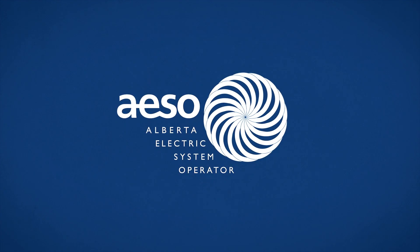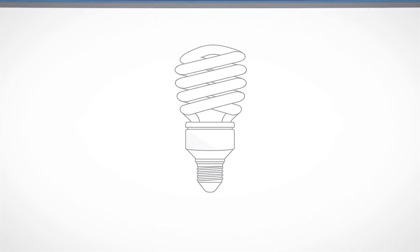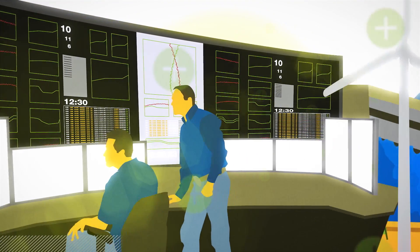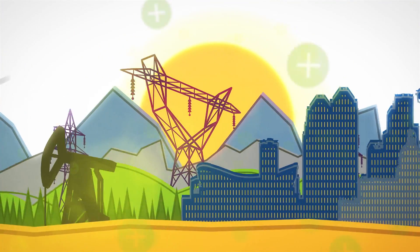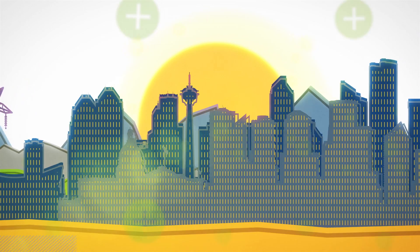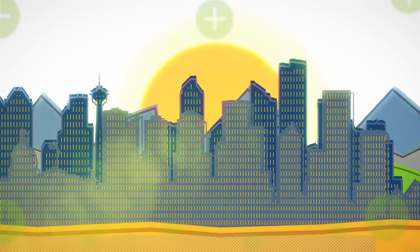As the Alberta Electric System Operator, we help keep the lights on. Every hour of every day, ISO system controllers are managing the power grid, working with the many companies involved in generation, transmission and distribution and ensuring there's enough electricity for all Albertans.